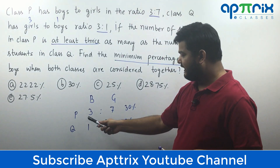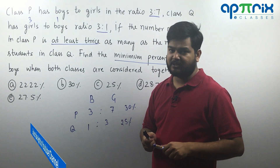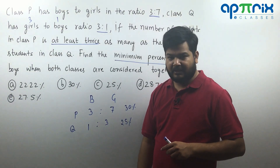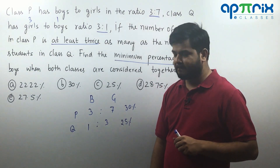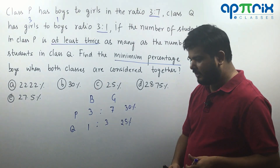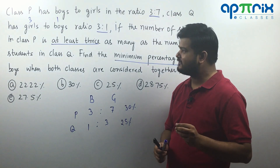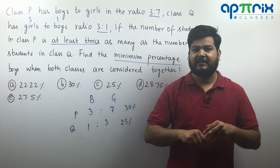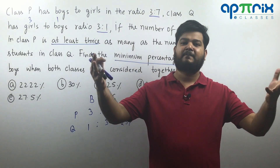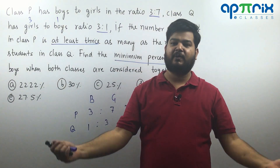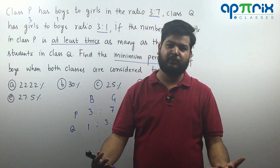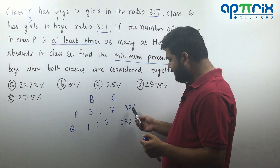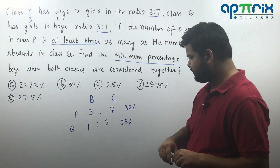Another piece of information is that in class P the total number of students will be a minimum of 3 times the number of students in class Q. Now, if you learn averages visually rather than just through the formula of sum divided by count, you can use the property of averages here. When you have two values — 30% and 25% — the average must lie somewhere in the middle. It cannot be less than 25 or more than 30, and we can already reject some options.